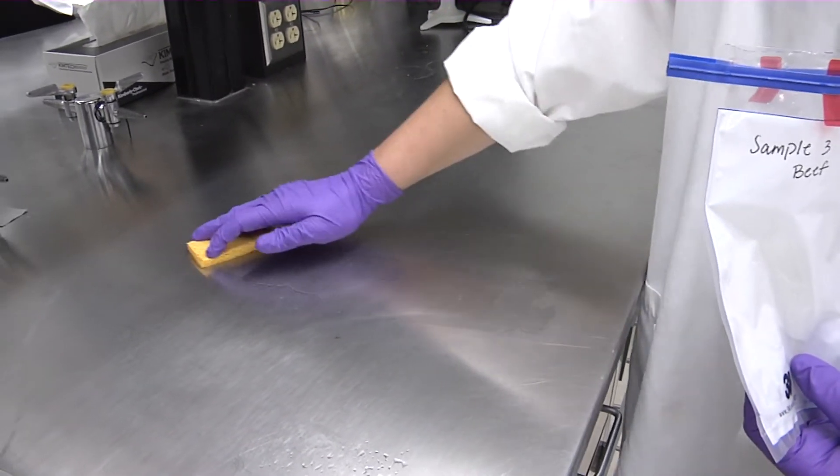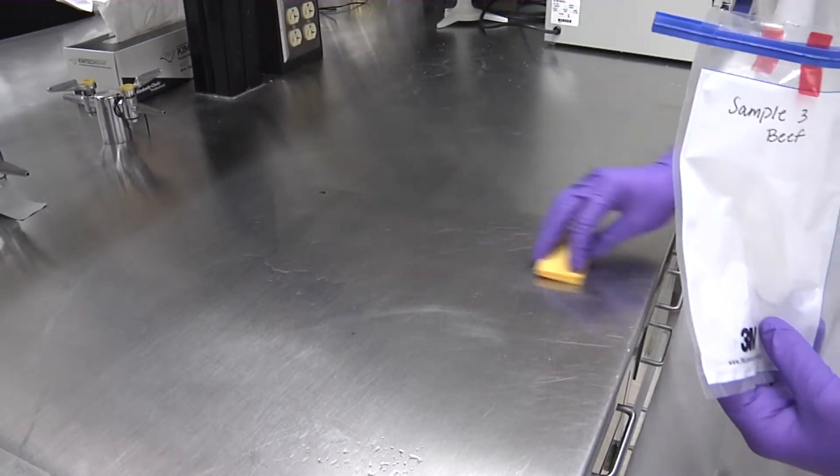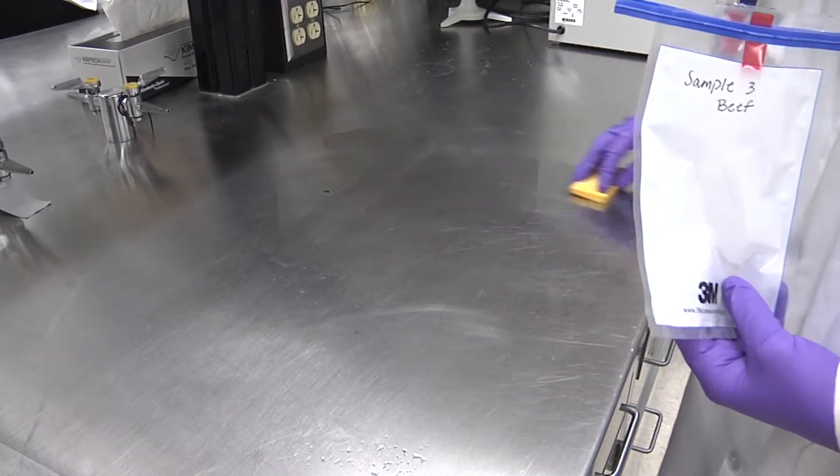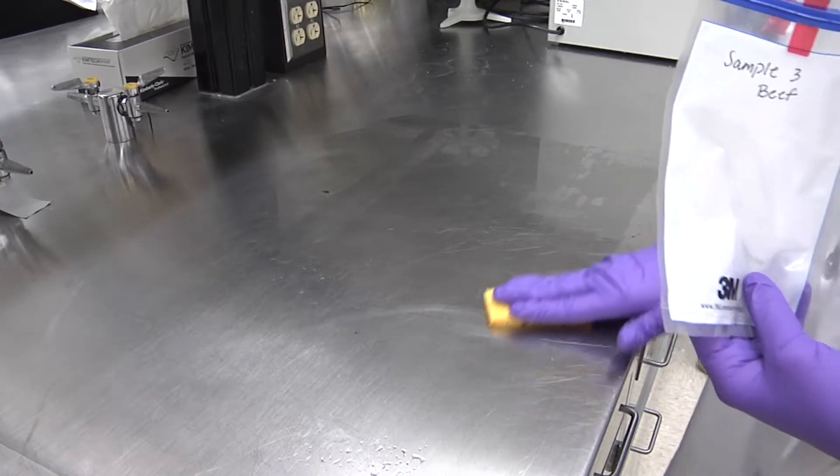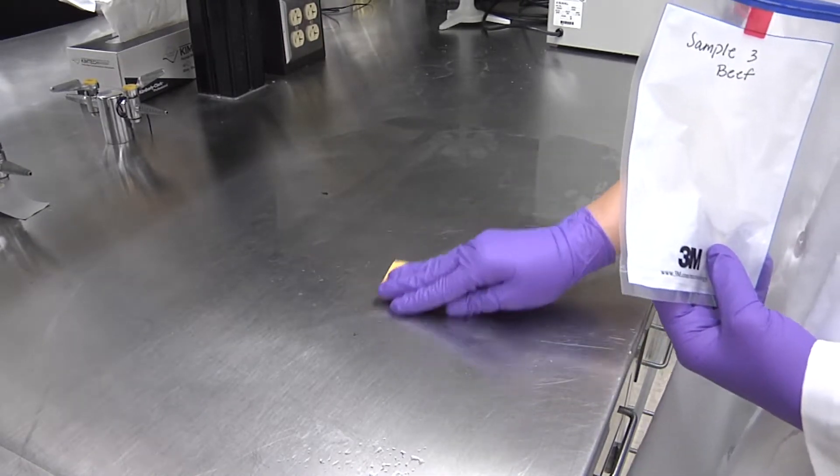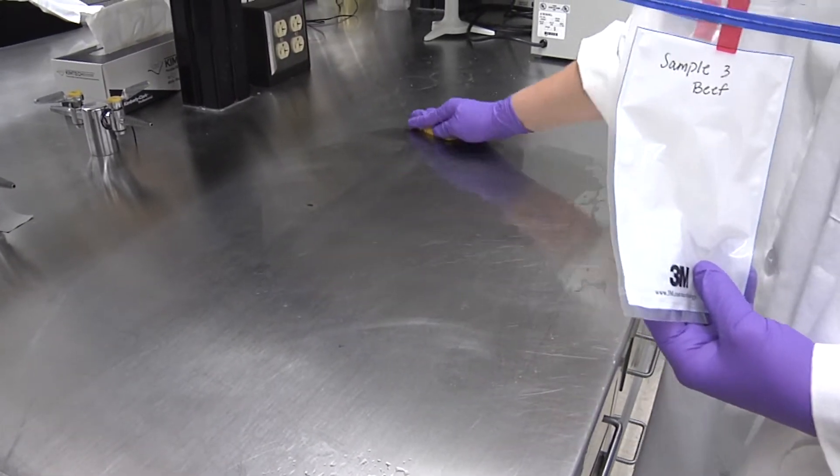Wipe the sponge on the area to be tested, covering a broad area. Some use a standardized area of one foot by one foot. Turn the sponge over and re-wipe the same area, but rubbing in the opposite direction.